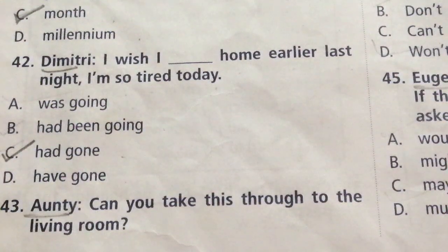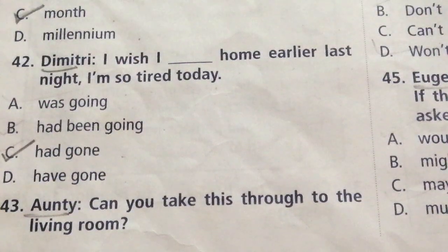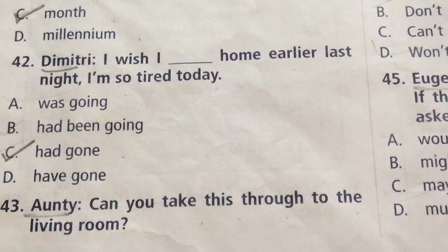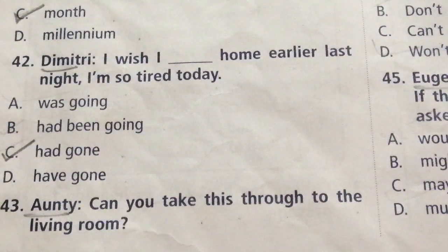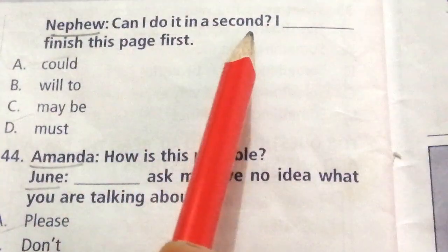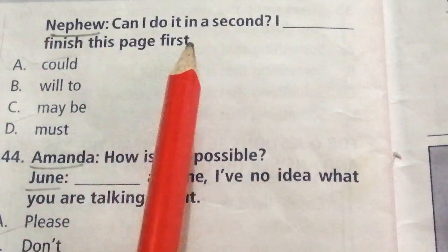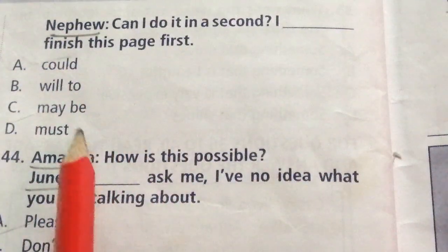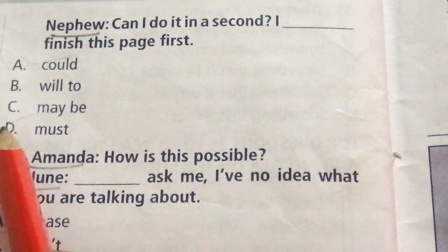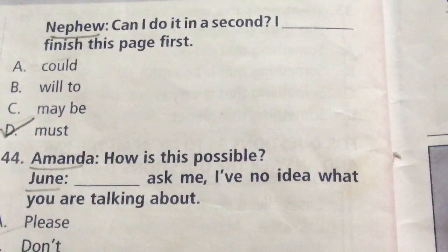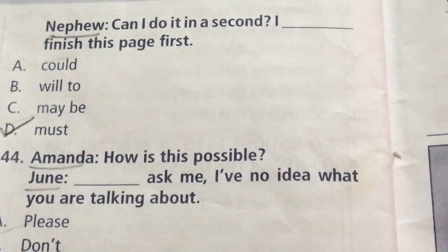Question 43 — Auntie: Can you take this through to the living room? Nephew: Can I do it in a second? I dash finish this page first. Options: Would, Will, to, Must. The answer is D: Must. Can I do it in a second? I must finish this page first.